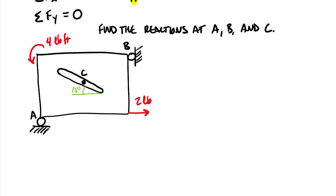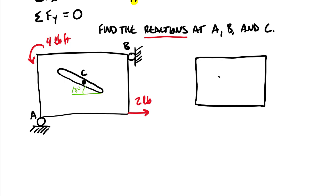This is how an equilibrium problem is framed — the keyword 'reactions' should cue your brain that this is an equilibrium problem. The first thing we need to do is create a free body diagram. Step one is to isolate: I'm going to redraw this rectangular body and not add forces on top of the problem sketch — I need to replace the supports with reactions. Step two is to add an axis system; let's use a standard Cartesian x and y.